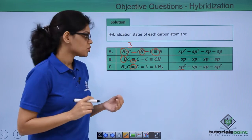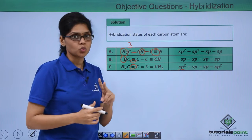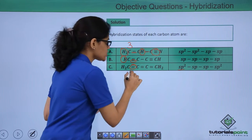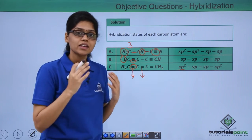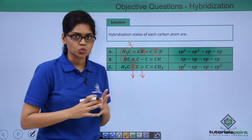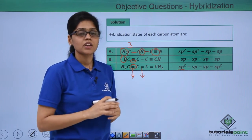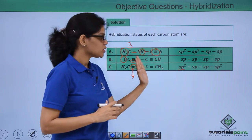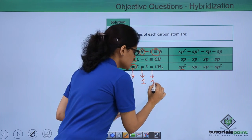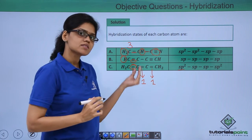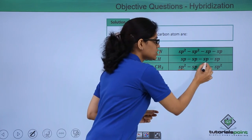However, that is not true, because the total number of sigma bonds this carbon atom is involved with is only 2. In the first double bond there is 1 sigma bond, and in the second double bond there is also 1 sigma bond. Since the net number of sigma bonds is just 2, the hybridization state is SP and not SP2. The same applies to the next carbon atom — it also has 1 sigma bond from each double bond, for a total of only 2 sigma bonds, so its hybridization state is also SP.